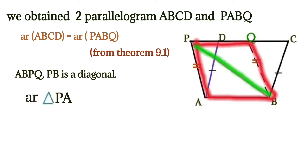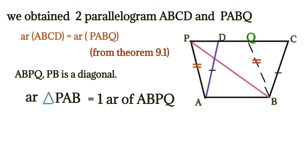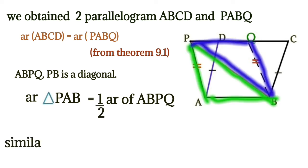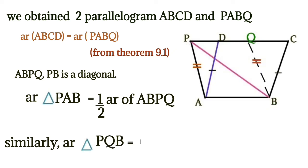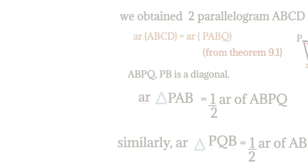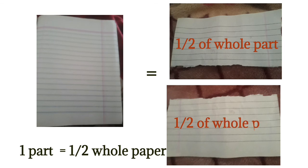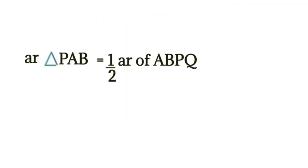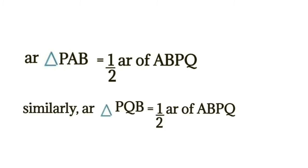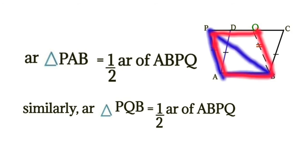Take parallelogram ABPQ. The diagonal PB divides this parallelogram into two equal parts — two equal triangles. So one part is half of the whole parallelogram. For example, if I have a paper and tear it into two equal parts, one part is half of the whole paper. Like that, we can say: area of triangle PAB is equal to half of the area of parallelogram ABPQ.